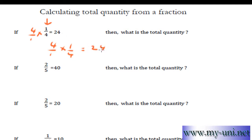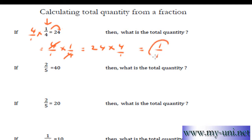And when you do that, you have to multiply this side of the equation by the reciprocal fraction as well. So 4 over 1. So this 4 and this 4 will cancel out. This is now equal to 1 over 1, or the whole quantity — just 1. And then 24 times 4: 4 times 4 is 16, carry over 1, 4 times 2 is 8 plus 1 is 9, giving 96 over 1. So the whole quantity is equal to 96.